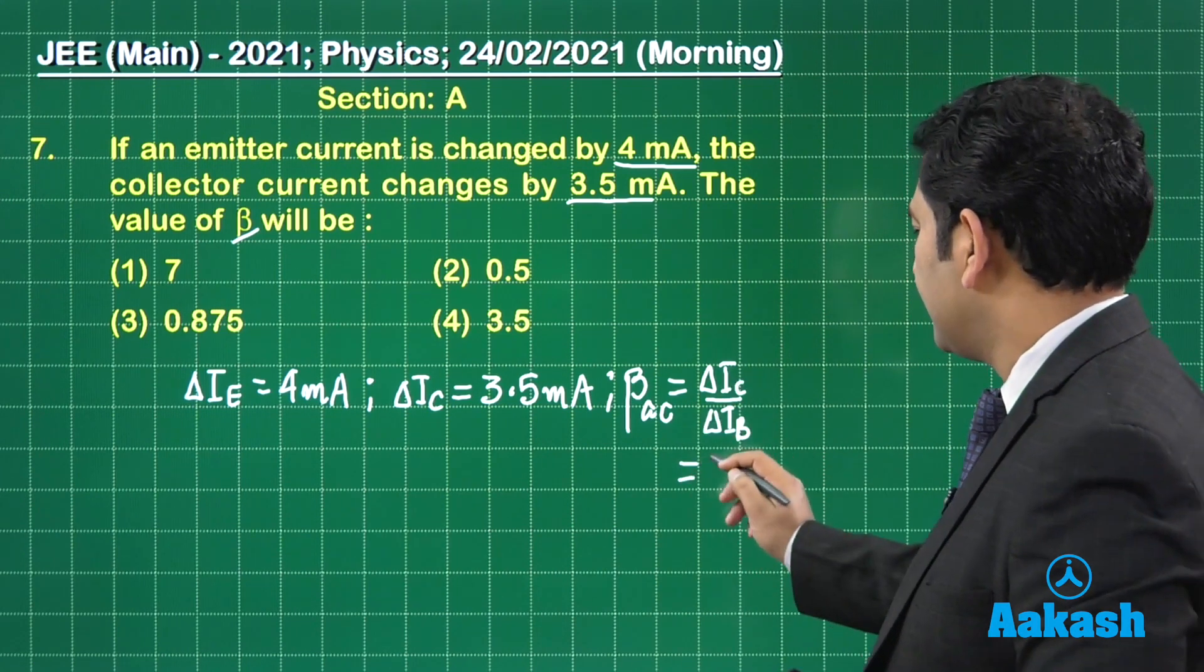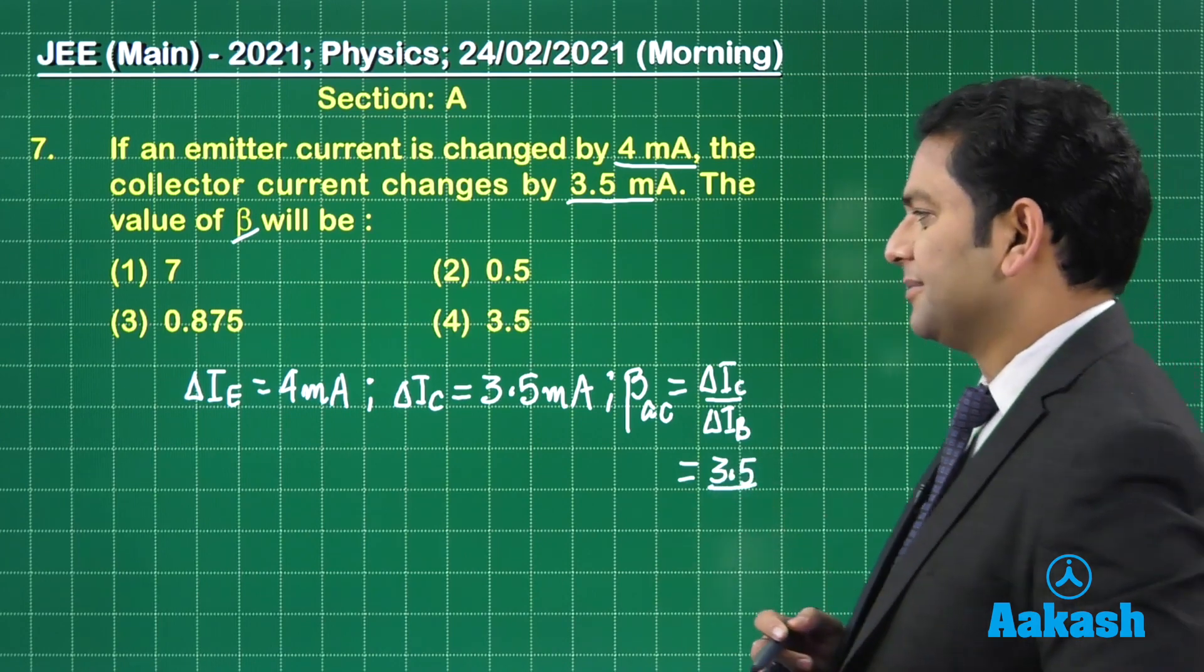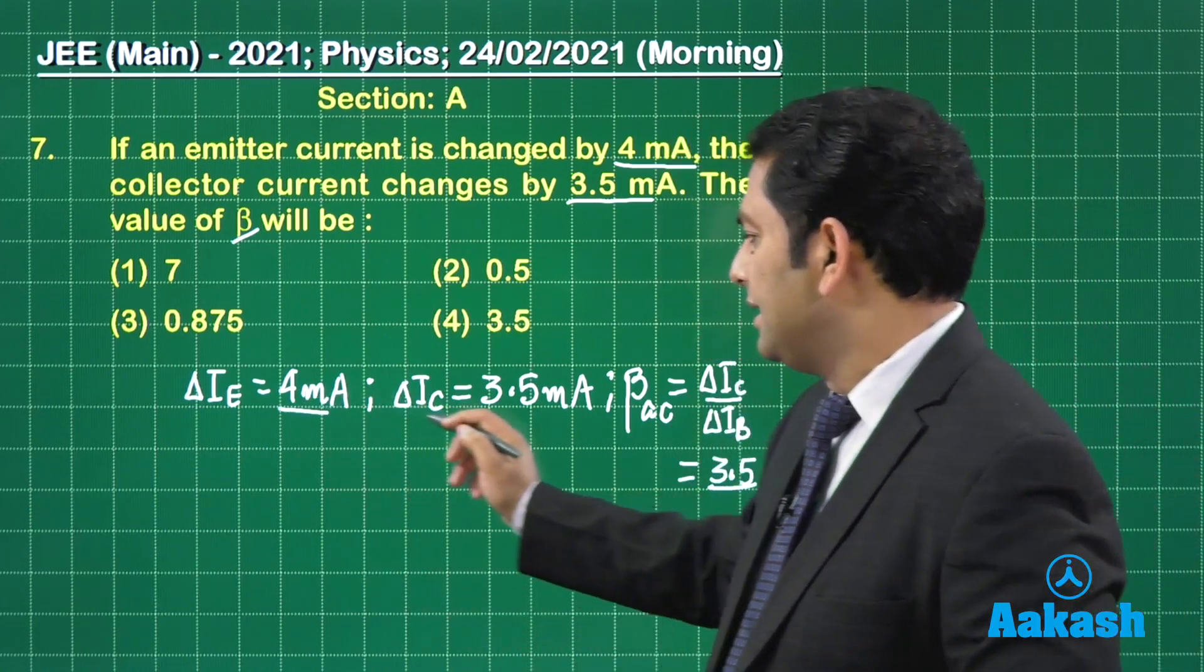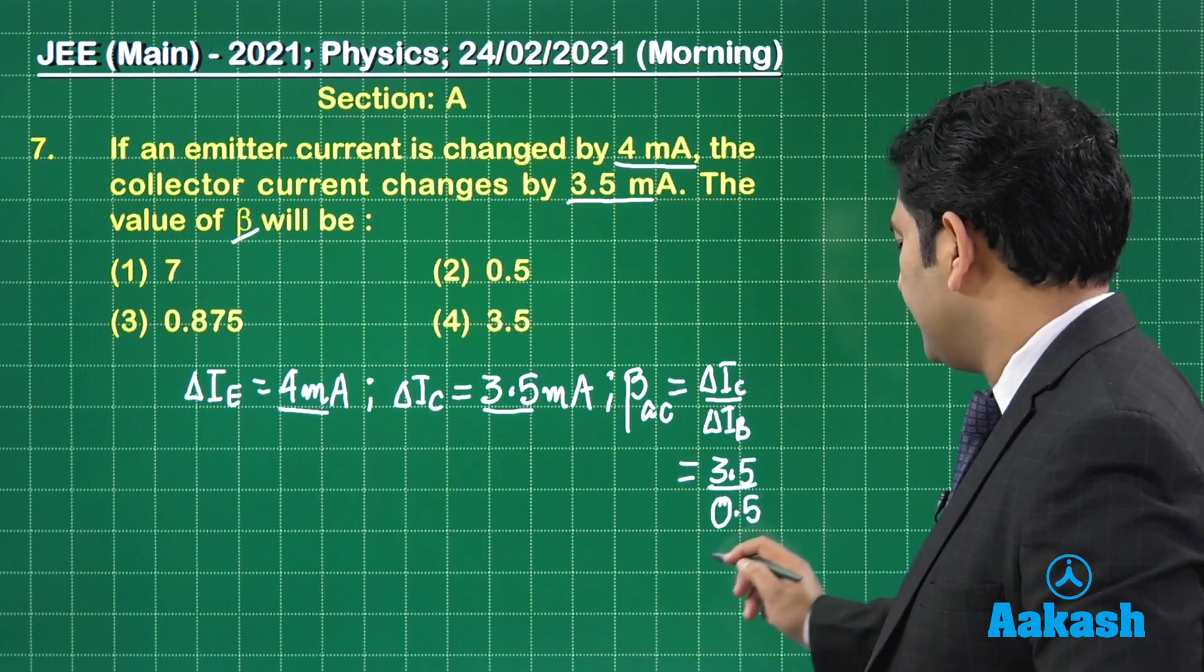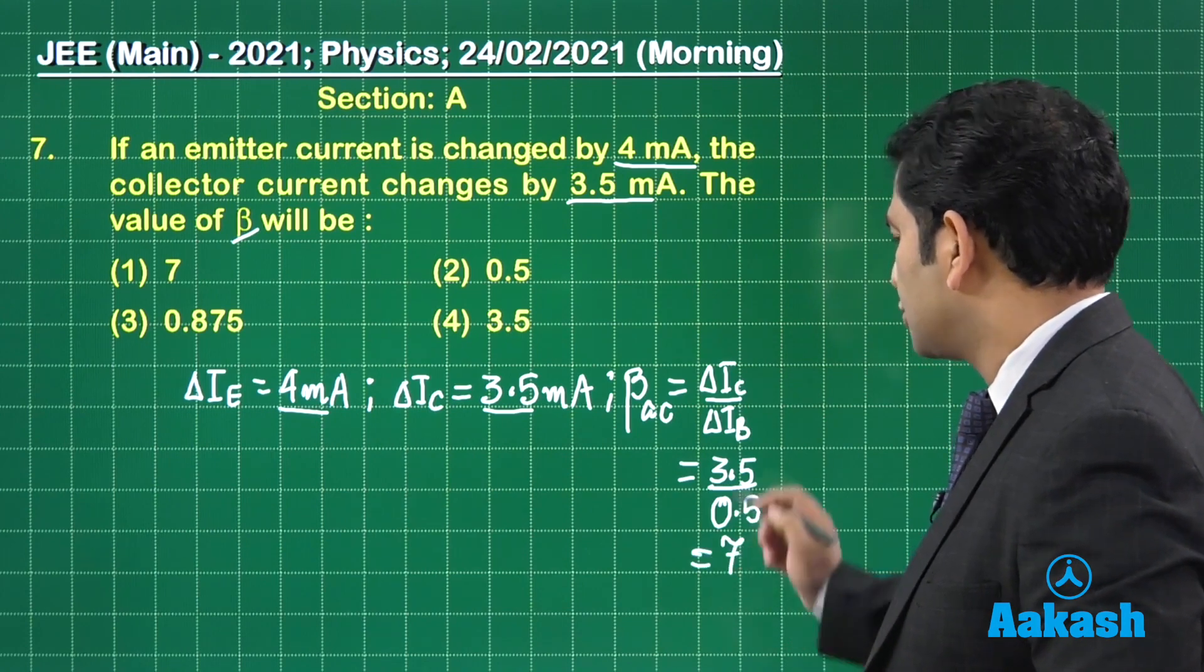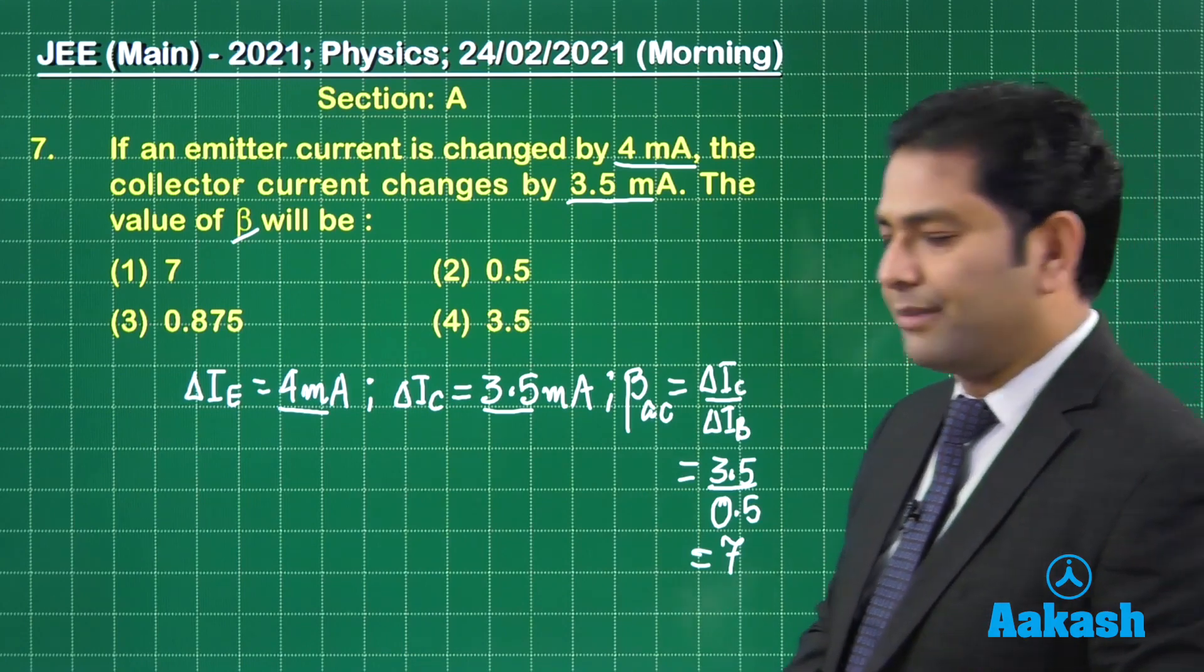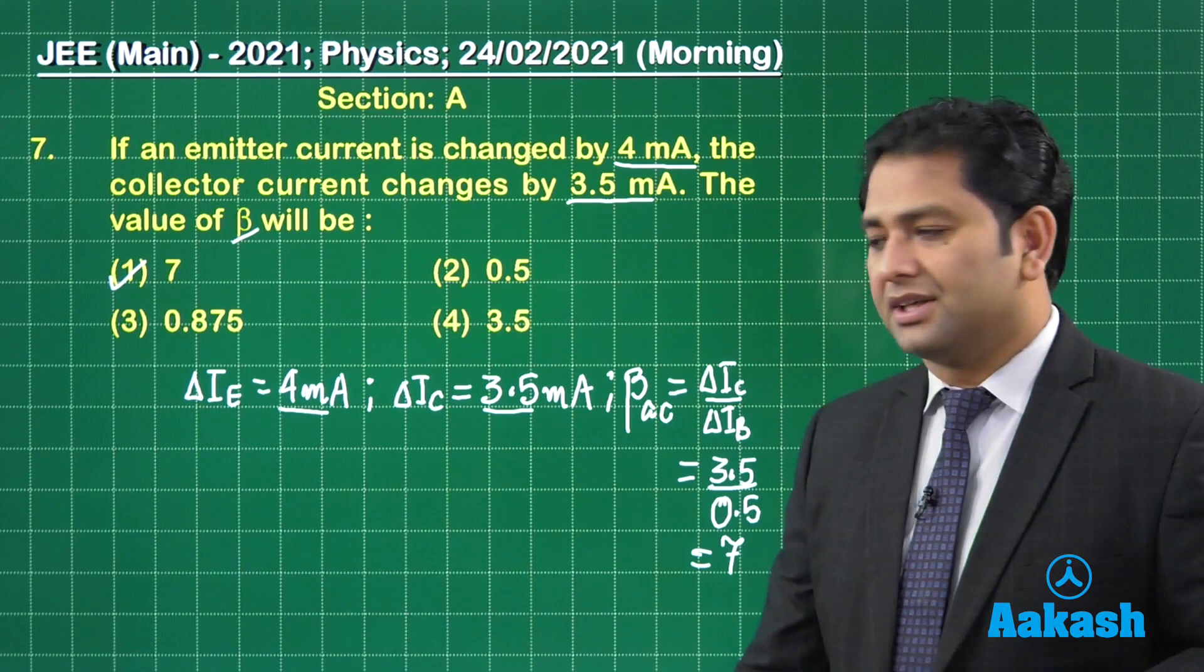Delta IC is 3.5. Delta IB will be delta IE minus delta IC, so that is 0.5. The value comes out to be 7. Beta is a unitless, dimensionless quantity. The option will be the first option.